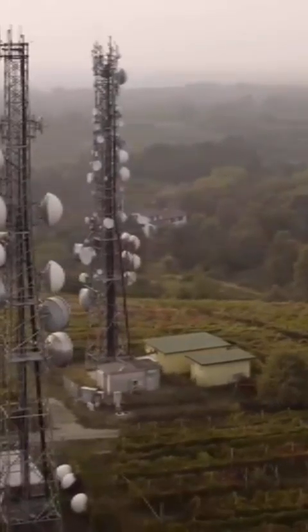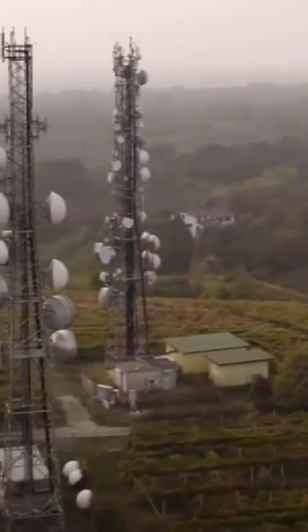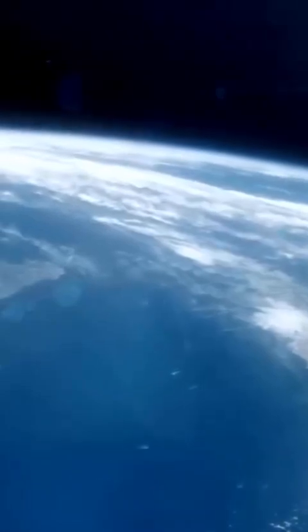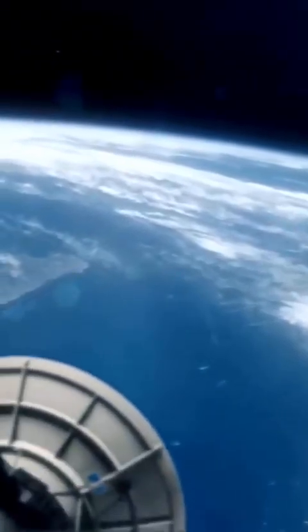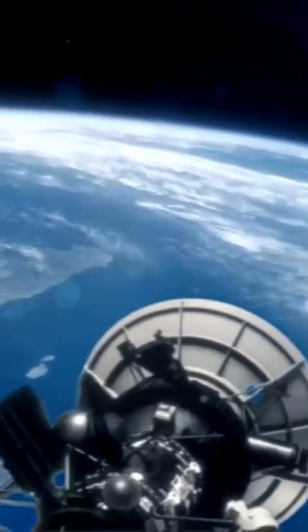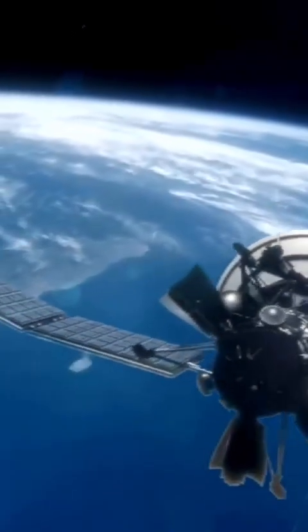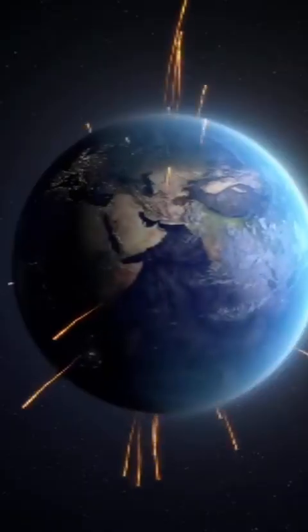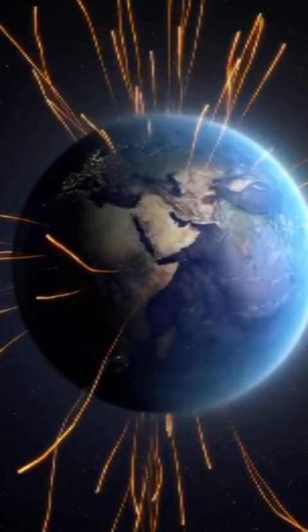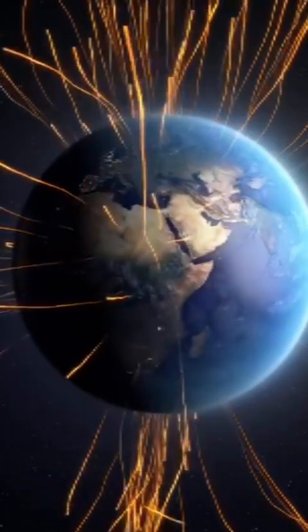Moons: Voyager discovered that Jupiter's moons were far more diverse than expected. Io, for example, was revealed to be volcanically active, the first time active volcanoes were observed outside Earth. Europa showed signs of a possible subsurface ocean, sparking speculation about extraterrestrial life.